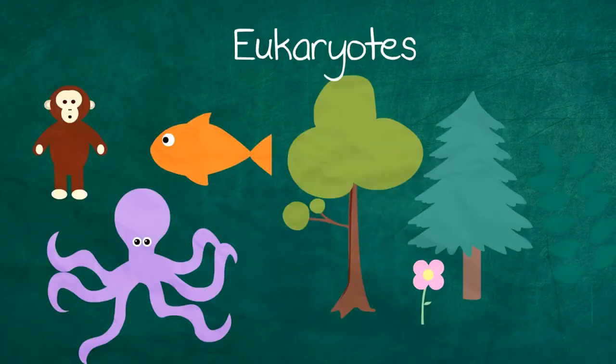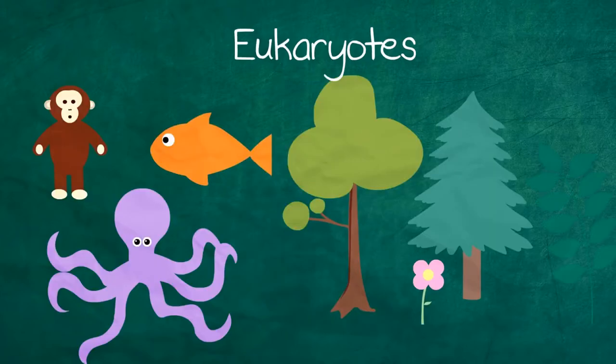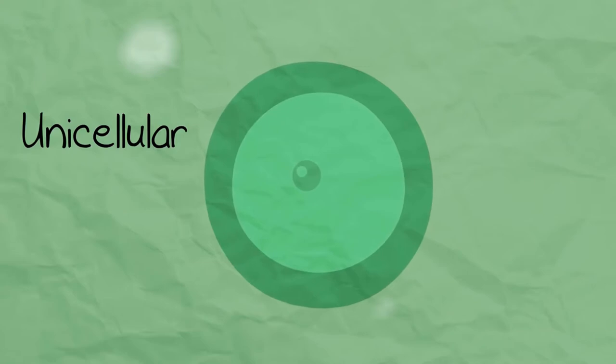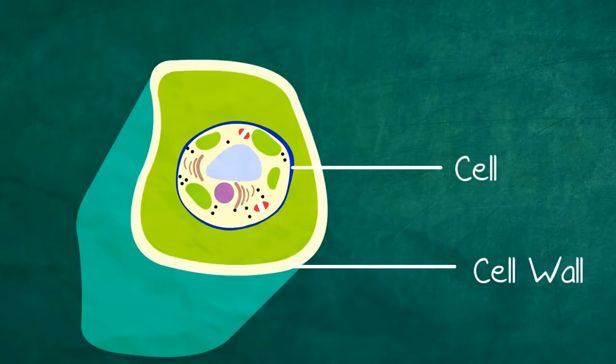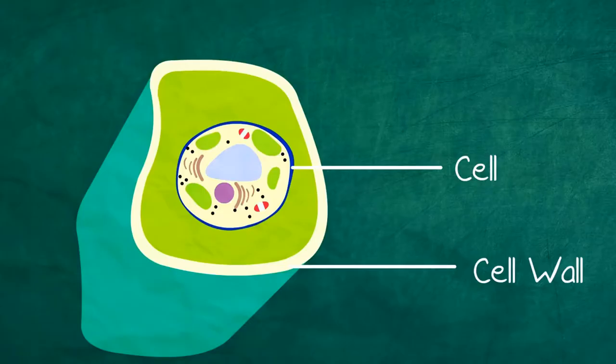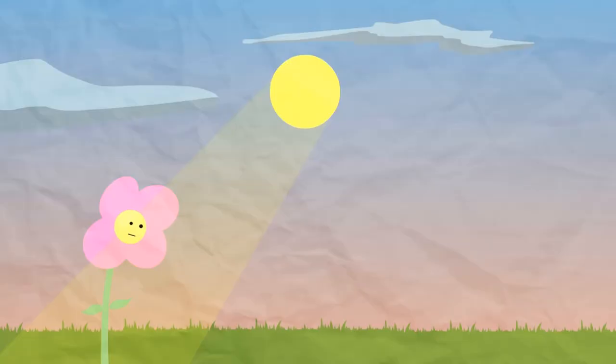The Protoctista kingdom are eukaryotes like animals and plants. They can be unicellular and multicellular like the fungi. They have cell walls sometimes with polysaccharides. They are autotrophic and heterotrophic.